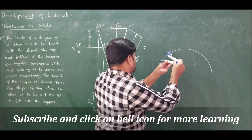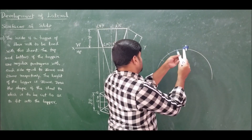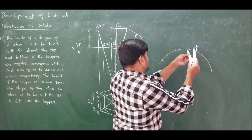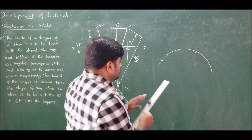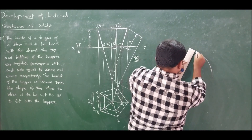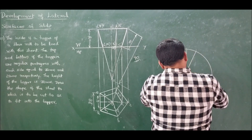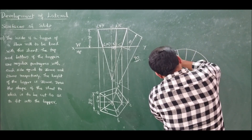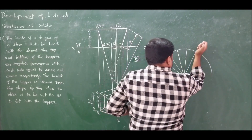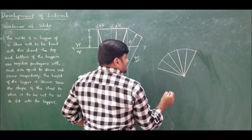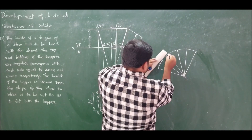Each side of the top pentagon measures 30 mm, so measure 30 mm and cut arcs at equal intervals along the 90 mm arc: one, two, three, four, and five. Connect these points back to the center O.